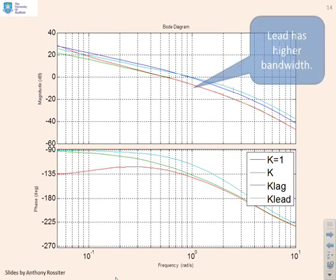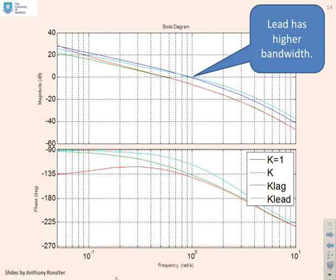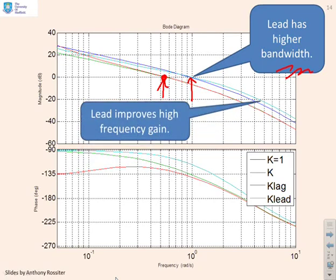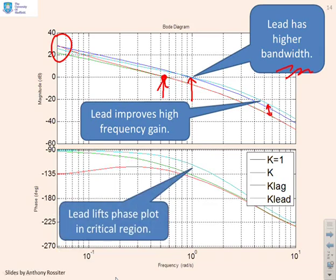Plugging those numbers into the formula gives us the compensator. Here are the new Bode diagrams. The lead has a higher bandwidth than the lag — you can see the lag gain crossover frequency and the higher lead gain crossover frequency. The lead also has a higher high-frequency gain, though the lag has a higher low-frequency gain. The lead has lifted the phase plot in the critical region at the crossover frequency, giving a better phase margin than from the simple gain design or the lag compensator.